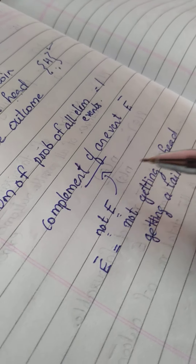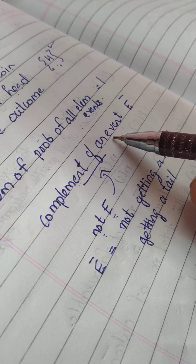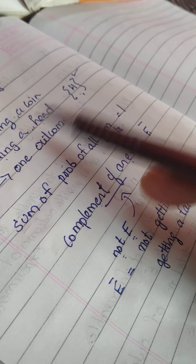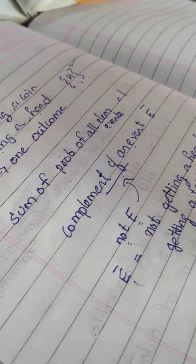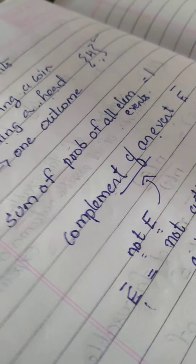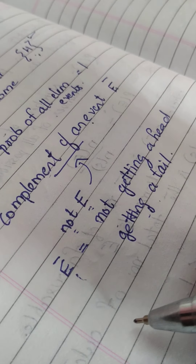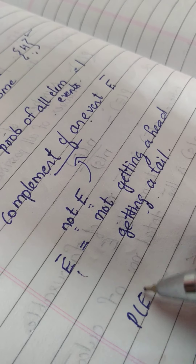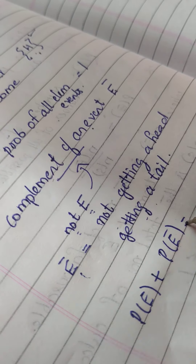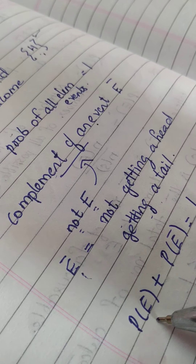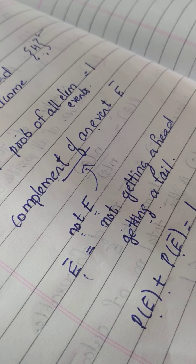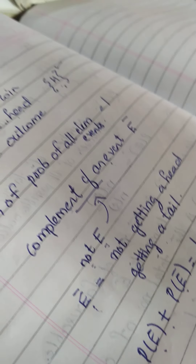So not-E means it's the complement of E. If E is getting a head, E-complement will be not getting a head, or getting a tail. There is one more condition: the probability of event E plus the probability of its complement is equal to one.